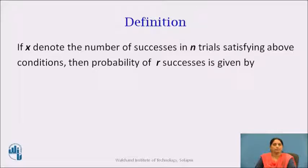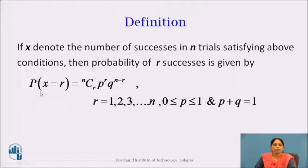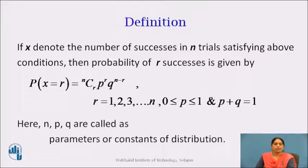If x denotes the number of successes in n trials satisfying the above conditions, then the probability of r successes is given by P(x = r) = nCr × p^r × q^(n−r), where r runs from 1 to n, and p lies between 0 and 1 such that p plus q equals 1. Here n, p, q are called the parameters or constants of the distribution, as if we know the values of n, p, q, we can define the probability for any value of r.